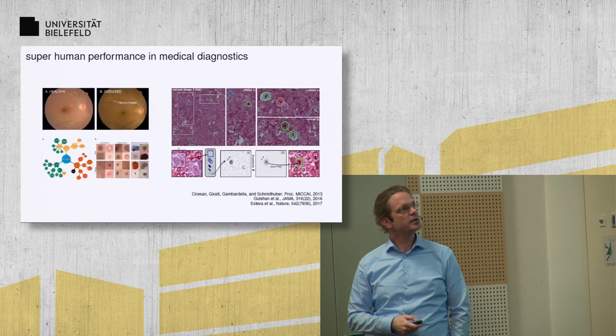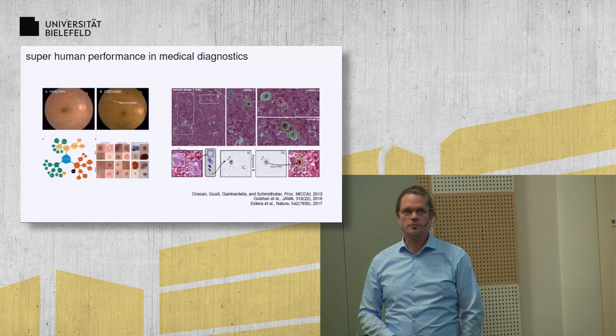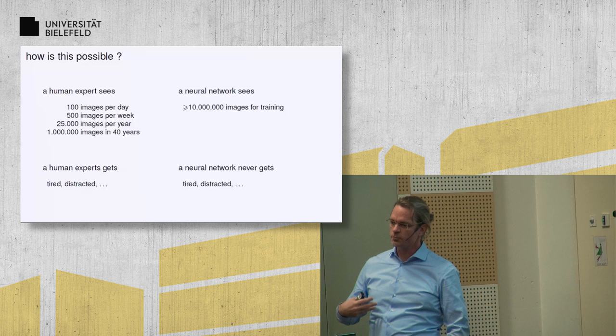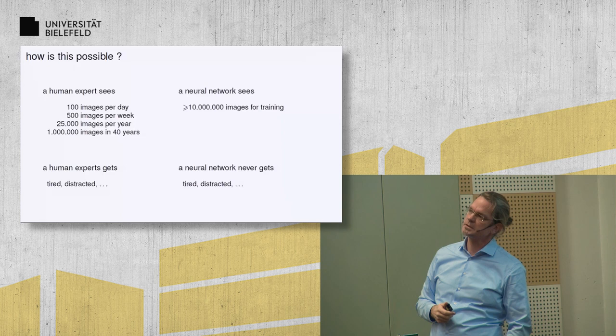Here are examples from medicine. You can train these deep neural networks to perform medical diagnostics, and it turns out that in many cases, such as skin cancer recognition, these neural networks are way more reliable than medical professionals. And you might ask yourself, how is this possible? Well, let's do some math.